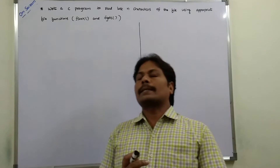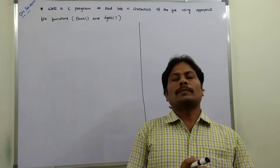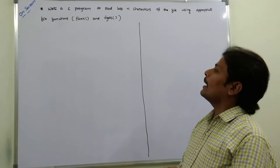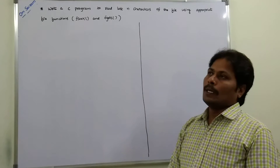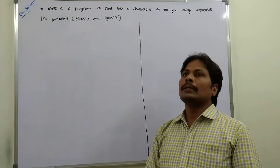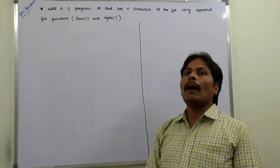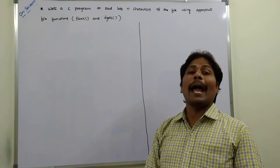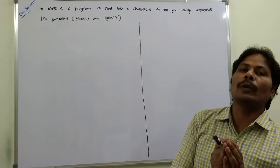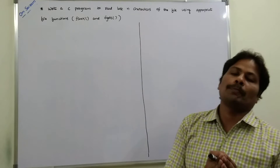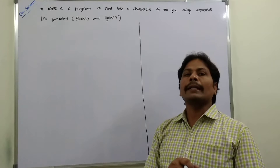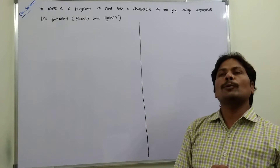We are going to discuss a program in files. Write a C program to read the last N characters of a file using appropriate file functions. Suppose we take one file that contains some information. We have to read N number of characters from the end of the file, starting from the end of the file.